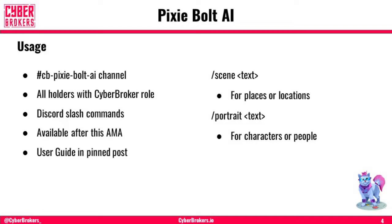As an overview, before we hand it over to Architect for some demos, there'll be a single channel for it called CBPixieBoltAI. All holders with a Cyberbroker role will have access — you do need to be verified with CollabLand to get into it. It will have Discord slash commands, the slash at the front, immediately available after this AMA. There is a user guide you can refer to after the AMA. There are two primary commands: scene, which is a landscape version for places and locations, and portrait, which is for people and characters.